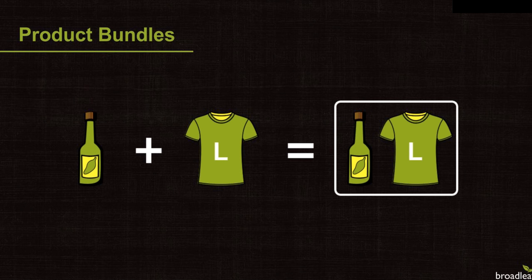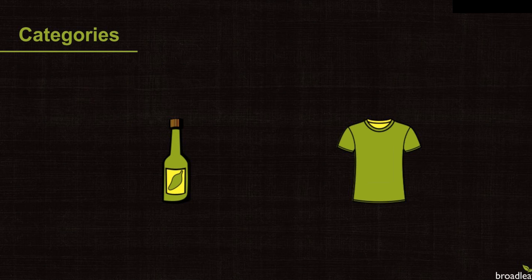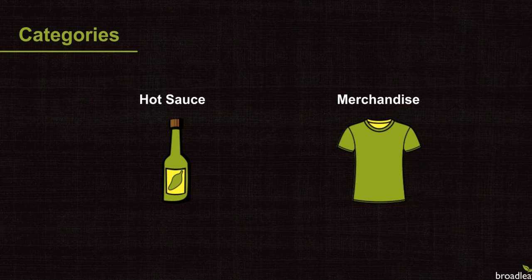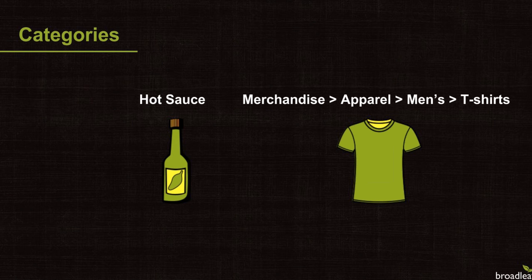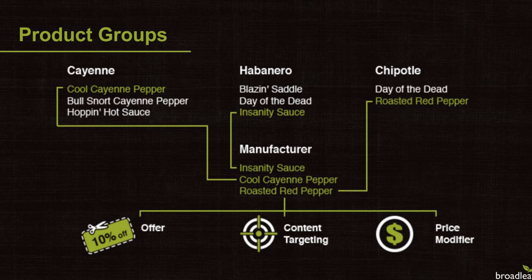Broadleaf uses categories to group sets of products and product bundles. For example, the hot sauce products will be placed under the hot sauce category, and the t-shirt product might be placed under the merchandise category. For a more specific category hierarchy, the t-shirt product could be placed under its own subcategory: merchandise, apparel, men. However, grouping products using categories can sometimes be a bit too rigid to solve every business case.